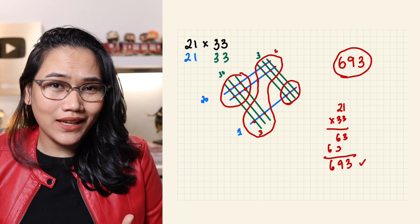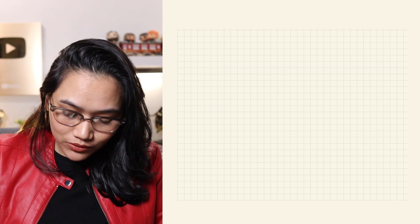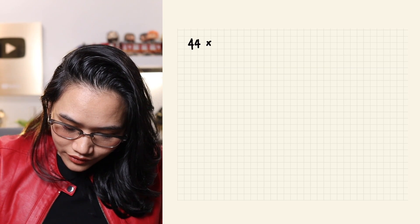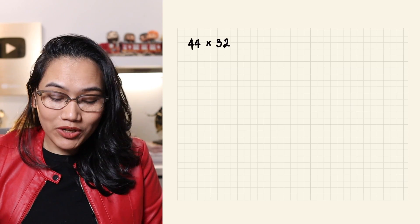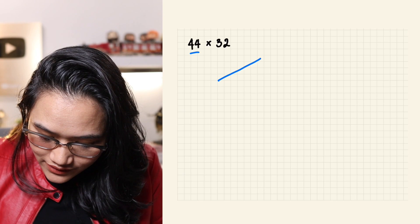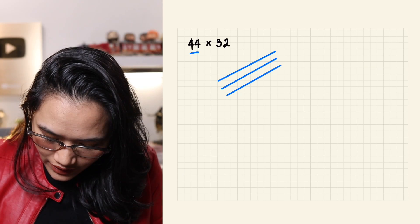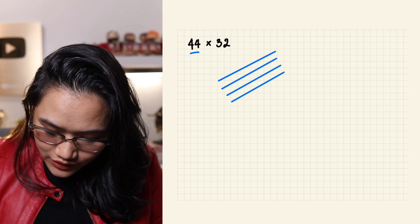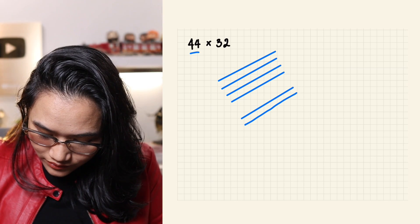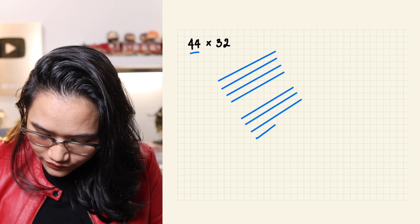Let's raise the bar higher by using bigger numbers: 44 times 32. Same idea. For 44, we're going to draw 4 lines: 1, 2, 3, and 4. This is 40. And another 4 lines at the bottom: 1, 2, 3, and 4.